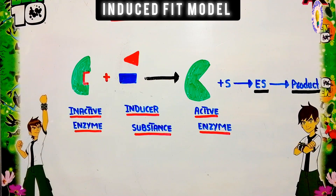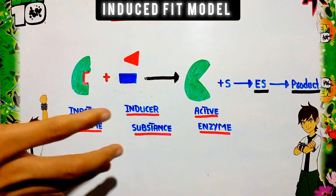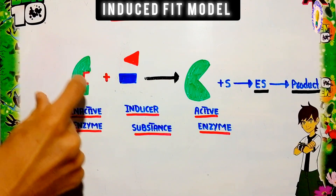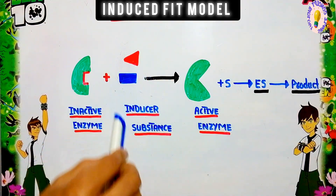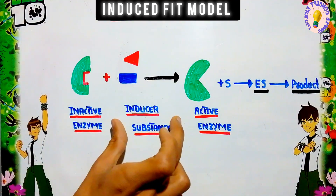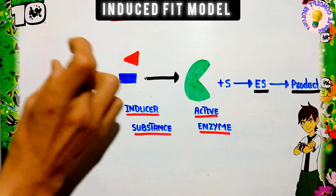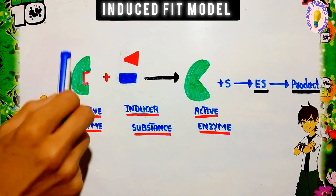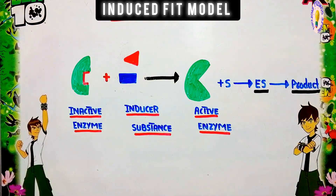For this modification to occur at the active site of the enzyme, we require a substance or material. This substance will react with the inactive enzyme and cause a change in the active site of the enzyme. Such a substance is called the inducer substance. This inducer substance is mainly responsible for causing the change in the active site of the enzyme.